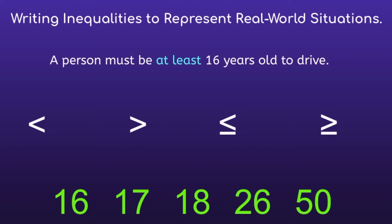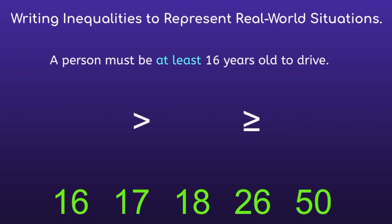If they have to be at least 16, we know they can't be less than 16. So we can get rid of the two inequality signs — less than and less than or equal to. Now we only have two inequality signs left: greater than, or greater than or equal to. Since it's 'at least 16 years old,' that means the person could be exactly 16, or equal to 16. So the inequality sign we will use is greater than or equal to.